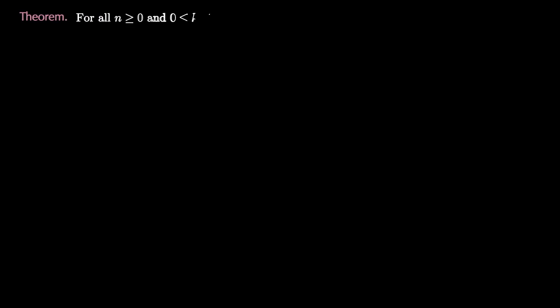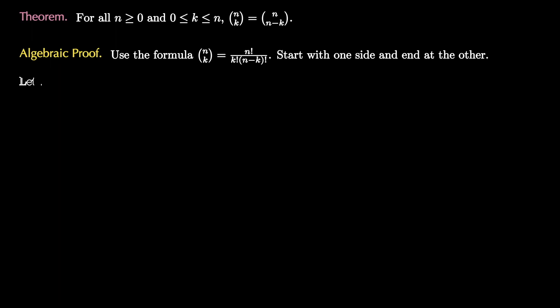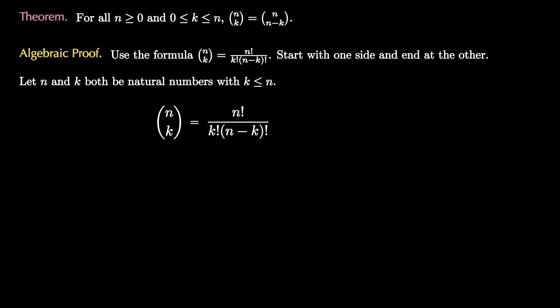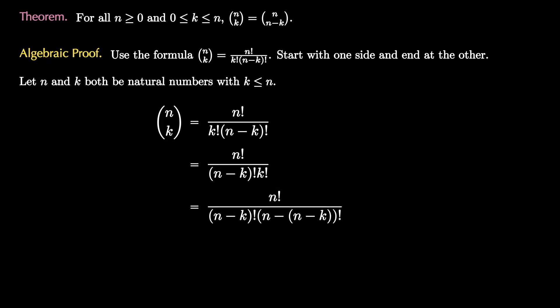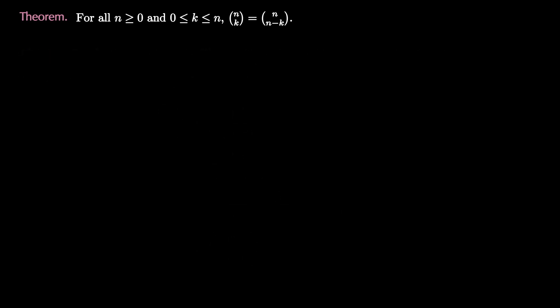We'll investigate two proofs — algebraic and combinatorial — of a subset identity. The first identity is: n choose k equals n choose (n-k), for all n > 0 and 0 ≤ k ≤ n. This identity guarantees that rows are palindromic as we observed. Proceeding algebraically using the formula for n choose k: apply the formula, note that the denominator can switch orders, and note that k can be written as n minus (n-k). The resulting formula is exactly n choose (n-k), thus verifying the identity algebraically.